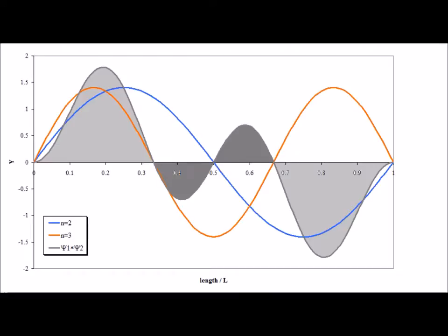We notice that the areas above and below the x-axis balance for the light gray regions, and they balance exactly for the dark gray regions. Therefore, the areas under the curve equal zero, and the two functions are demonstrated visually to be orthogonal to each other.